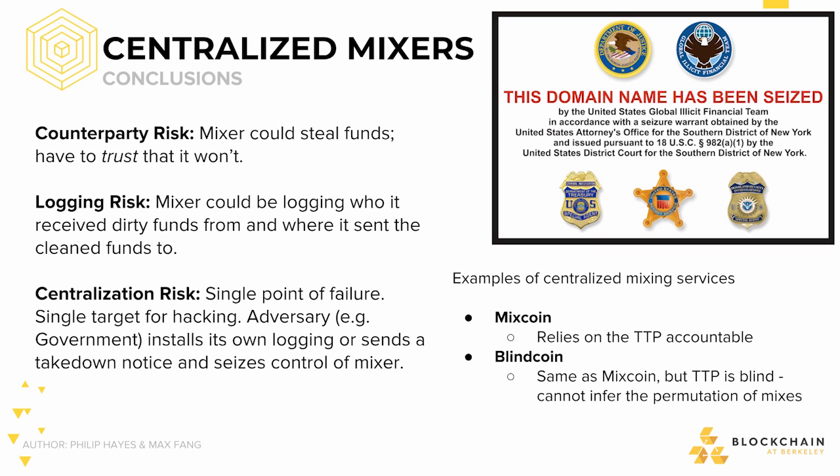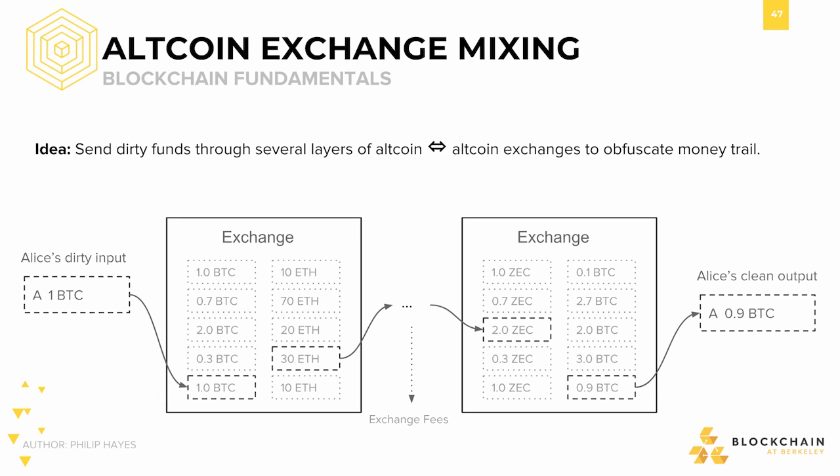A couple examples of centralized mixing services include MixCoin, which came out of Princeton Research, and BlindCoin, which came out of UMD and UPenn — an example of how theory meets practical applications. The next category of mixing to examine is altcoin exchange mixing. Rather than relying on a specific central service to perform the exclusive act of centrally mixing your coins, one can use a series of exchanges to bring money from Bitcoin to several other cryptocurrencies before finally coming back to Bitcoin. In this case, the cost of mixing coins is not a central mixing fee, but rather the exchange fees between each cryptocurrency used.